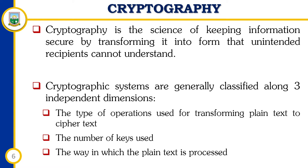Cryptographic systems usually require some method for the intended recipients to make use of the encrypted message — usually by transforming the ciphertext back into plaintext. Encryption is the process of turning plaintext into ciphertext. You might think of 'crypt' as something hidden or secret. Encryption is an important part of cryptography, but it does not encompass the entire science itself. Its opposite is decryption.